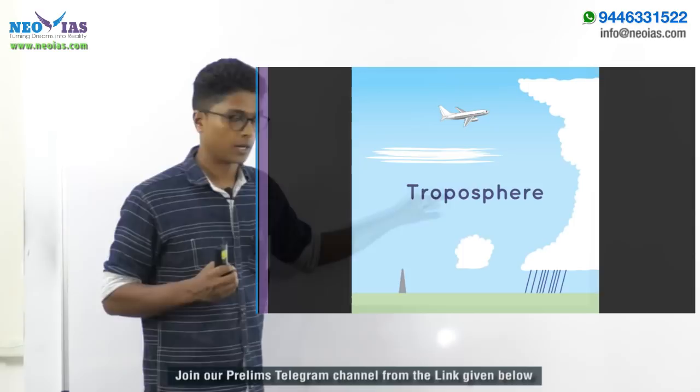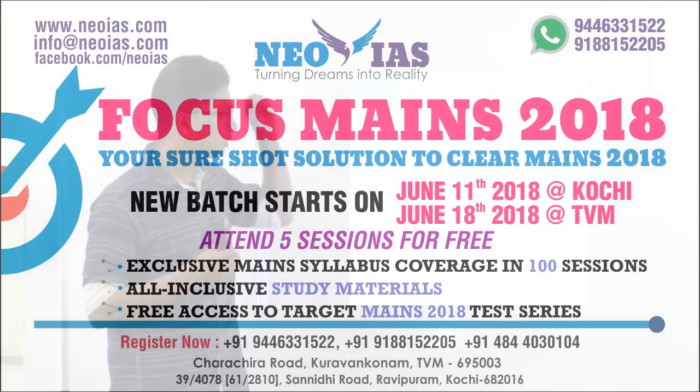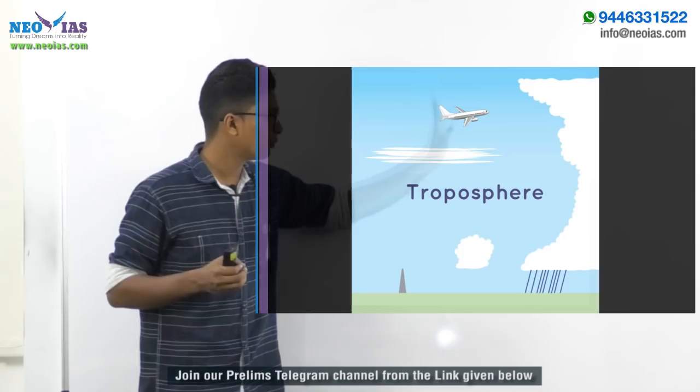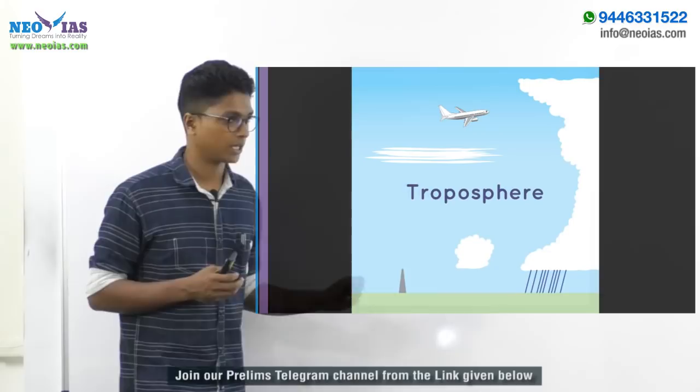In the case of aviation, this upward moving wind is not suitable. Rather, we should be having horizontally moving air. Horizontally moving wind should be there for aviation, and for these reasons, jet aeroplanes often avoid flying through the troposphere.